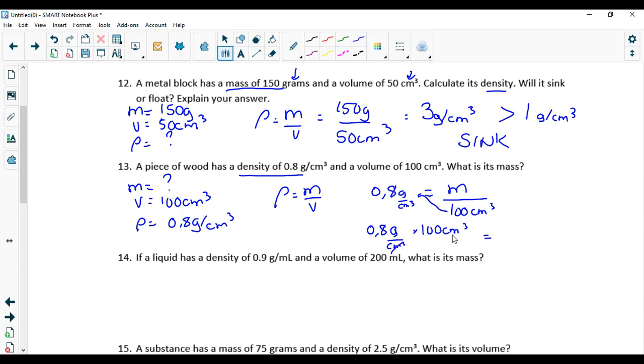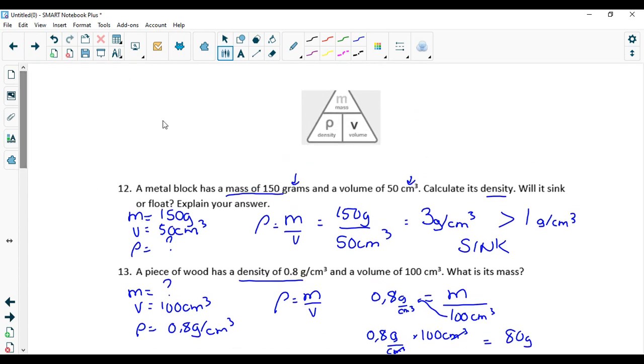Centimeter cube cancels, we end up with 80 grams. So if you wanted to verify using this triangle, remember the trick: hide the m, hide the m, and now you see the formula appears. So mass equals density times volume.